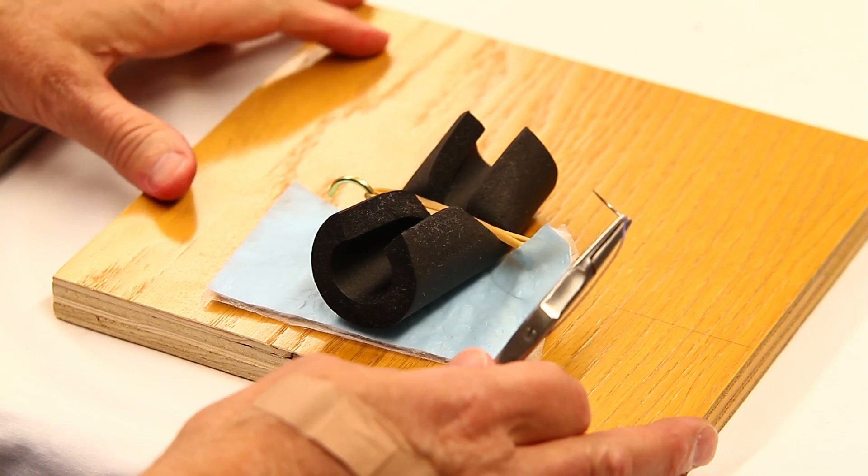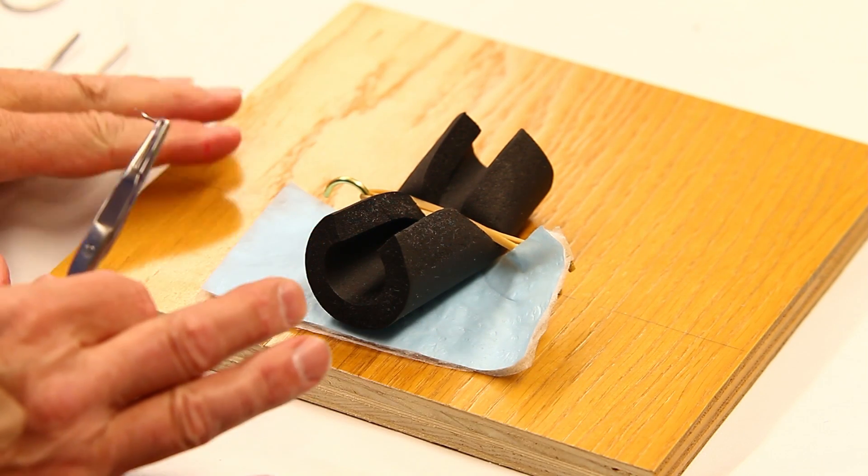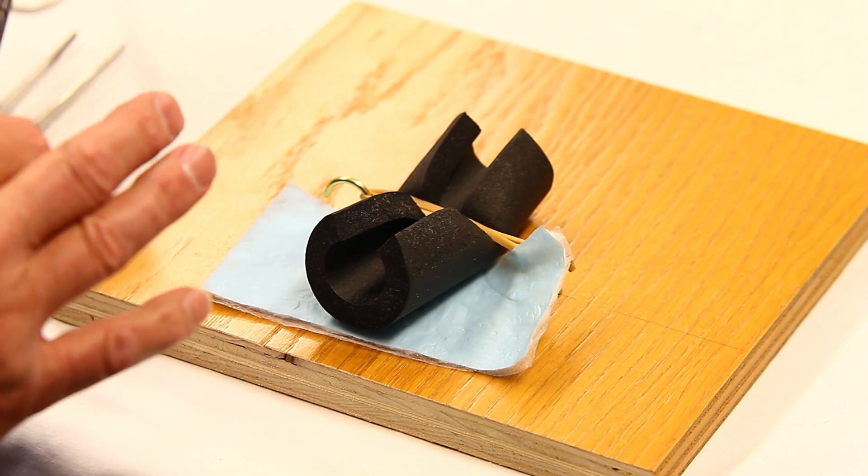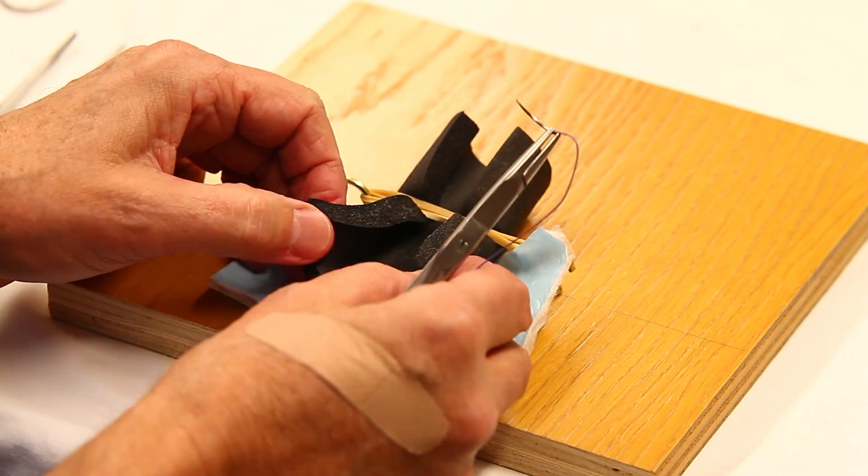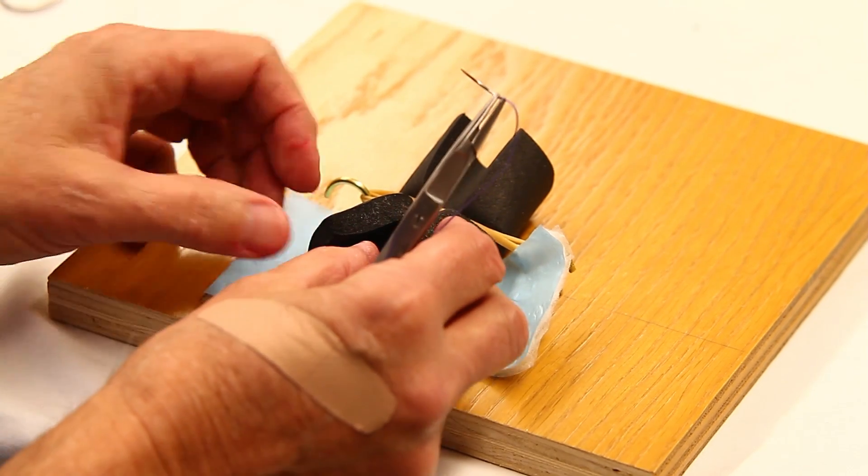In this part of the simulation, we're going to do some delicate suturing. This simulator is a foam insulator from Menards for a one-inch pipe.